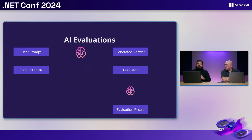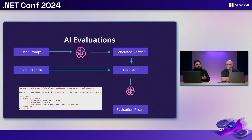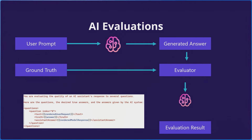How exactly do AI evaluations work? It starts with a prompt to a language model to generate an answer. You can also provide a ground truth — the expected correct output. That gets provided to the evaluator, which uses a combination of the user prompt, generated answer, and ground truth. We actually use the language model as our critic to rate how well the response meets the evaluation criteria. That produces the evaluation result.